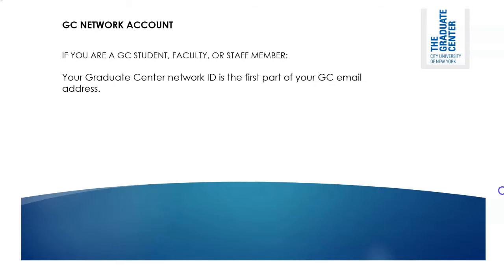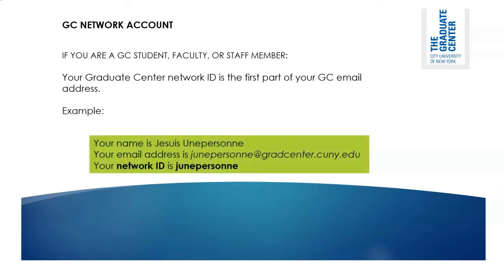To demonstrate with a fanciful example: if your name is Je Suis Une Personne, your email address is jSunepersonne@gradcenter.cuny.edu, and your network ID is jSunepersonne. The only time that will be different is if there's already a jSunepersonne at the Graduate Center, in which case we'd add a number — it might be jSunepersonne2.